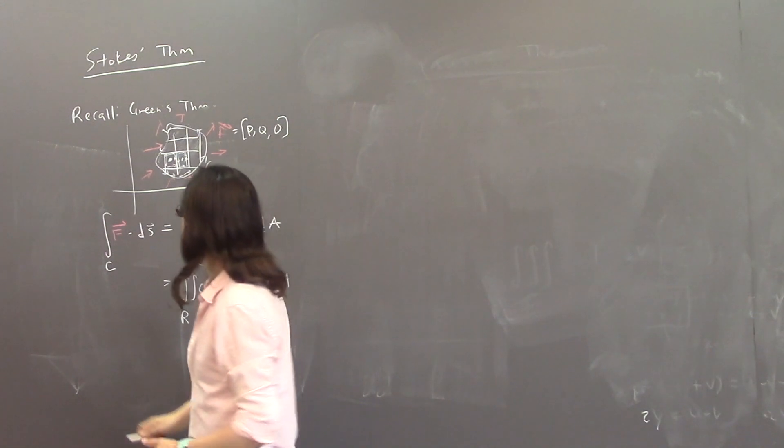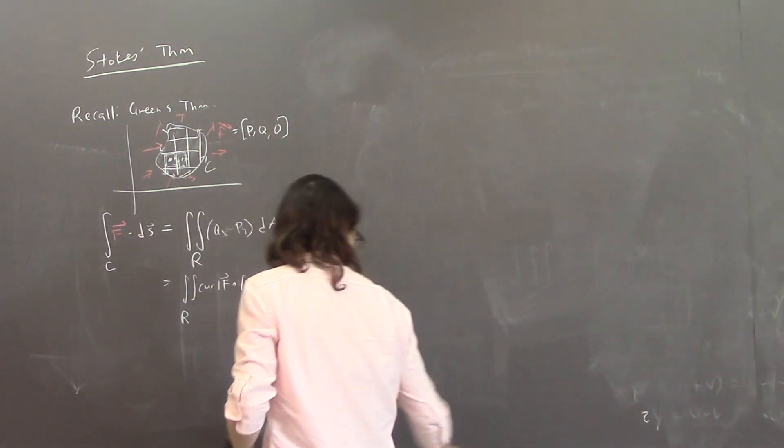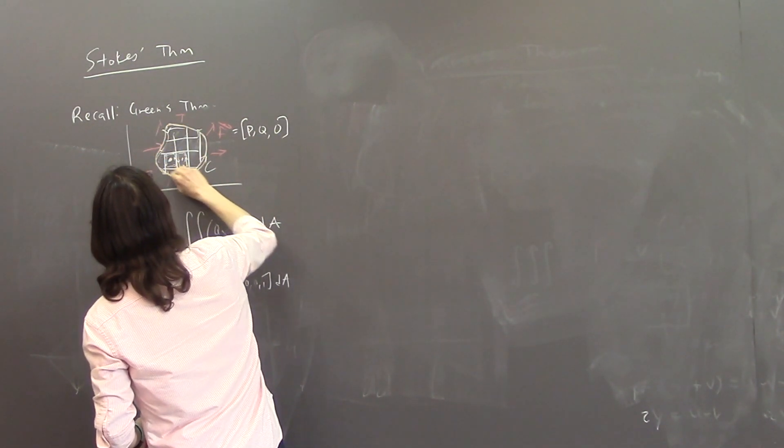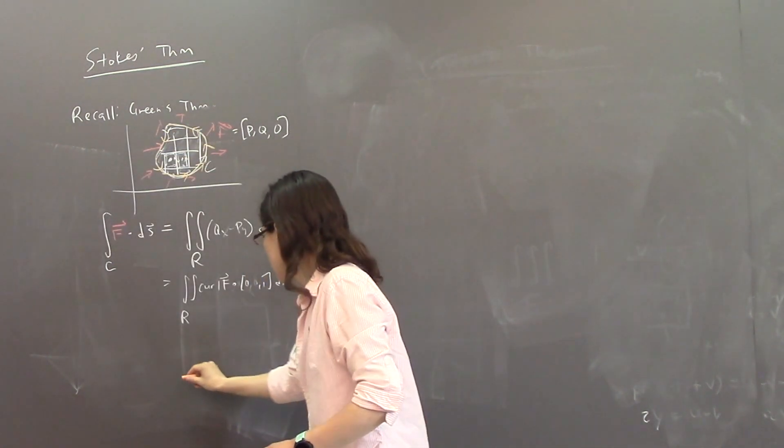So we can have a picture in three space. Maybe I'll make the boundary like orange or something. So there's our oriented boundary curve. And in three space, this thing is like,